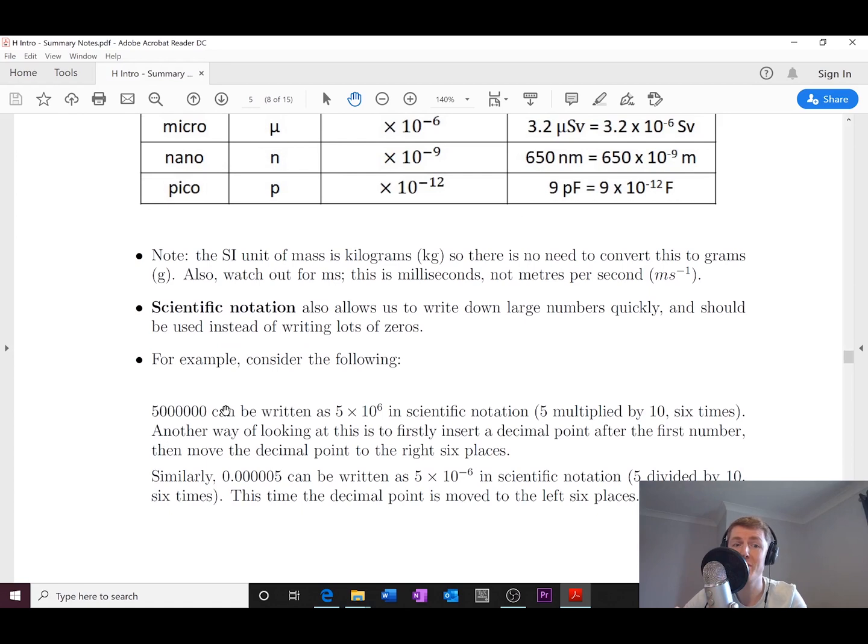And similarly, a really small number like 0.00005 can be written as 5 times 10 to the minus 6 in scientific notation.